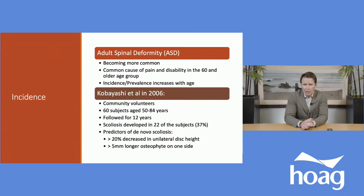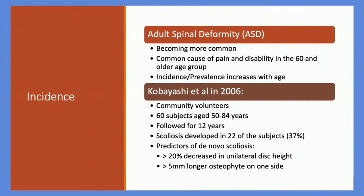The incidence of adult spinal deformity is becoming more common — a common cause of pain and disability in the 60-and-older age group. In a study performed in 2006 by randomly sampling community volunteers between the ages of 50 and 84 and following them for 12 years, scoliosis developed in 22 of the subjects — 37%. Risk factors included greater than 20% decrease in unilateral disc height and greater than 5 millimeters of bone spurs on one side.